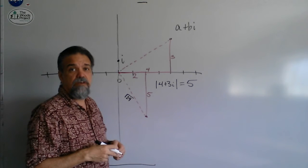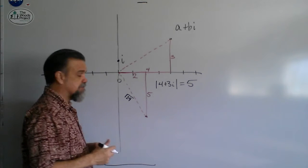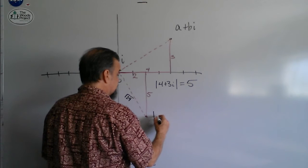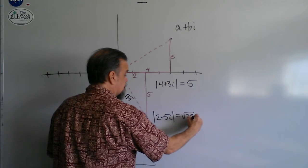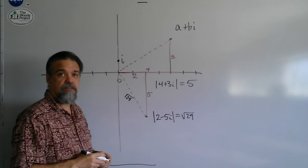4 plus 25 is 29, and this is going to be the square root of 29, which I actually can't simplify. I have to just leave it as the square root of 29. So, that tells me that the absolute value of 2 minus 5i is the square root of 29, and I leave it just like that.